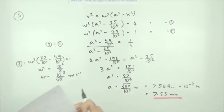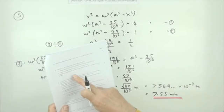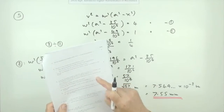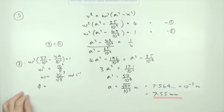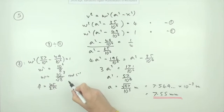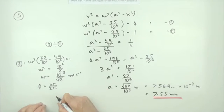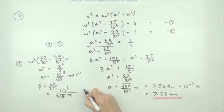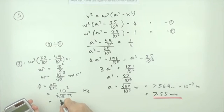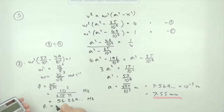The question asks for the number of oscillations per second — the frequency. Frequency f = ω/(2π) = 10³/(2√8·π). Evaluating this gives approximately 56.269 Hz, so the frequency is 56.3 hertz, or 56.3 oscillations per second.